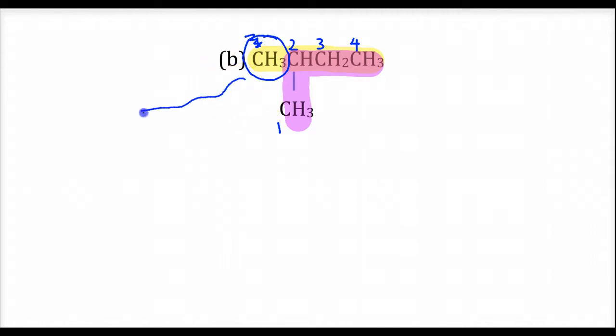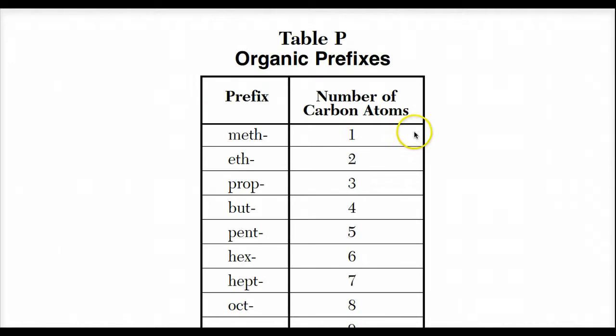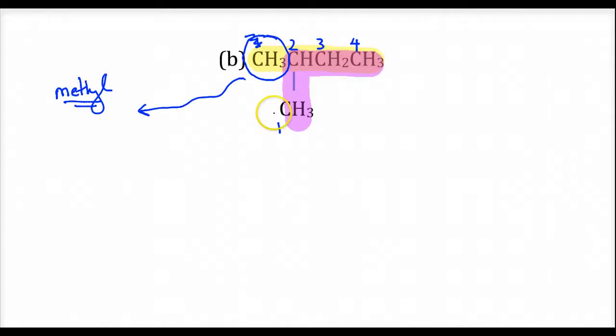And what pops out is we have an attaching group. Now this is called a methyl group. Why it's called a methyl group is because it's a one carbon group. And to name things that have a certain number of carbons, you need to memorize the prefixes for the parent names. We're going to use meth for the one carbon attaching group. And we put a Y and an L, a methyl. So we have identified a methyl group attaching.